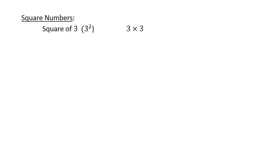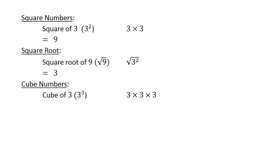Square numbers. The square of 3 equals 9. Square root of 9 equals 3. Cube numbers. The cube of 3 equals 27, and the cube root of 27 equals 3.